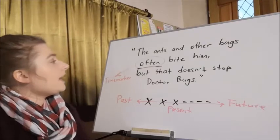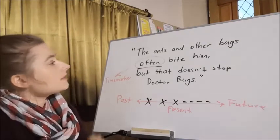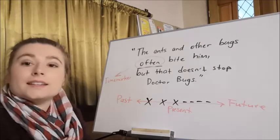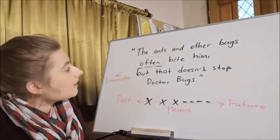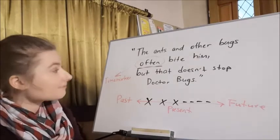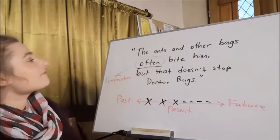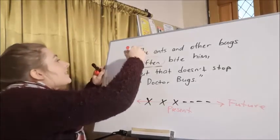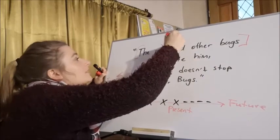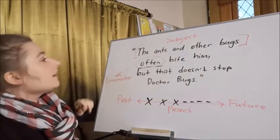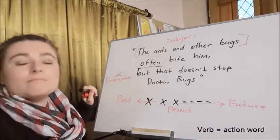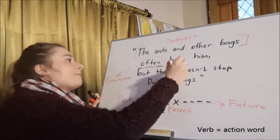Okay, and in this sentence, where is the subject? The ants and other bugs. So we've got subject. Okay, and where's the verb? Bite.